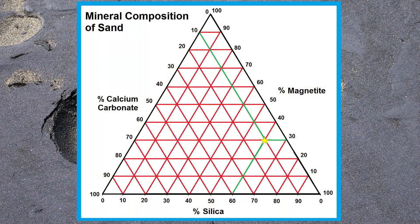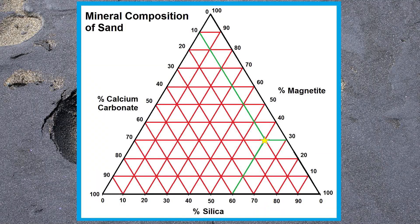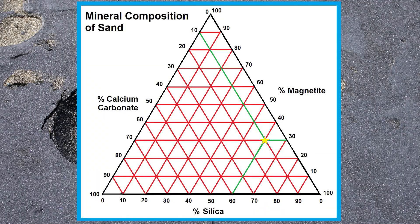For example, this diagram shows the proportion of silica, titomagnetite, and calcium carbonate in sand.